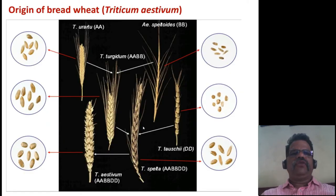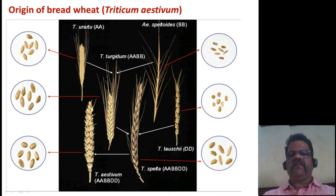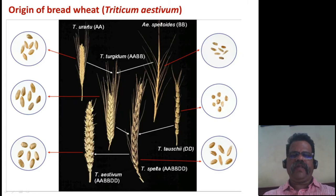This slide shows the origin of bread wheat. Triticum monococcum, which carries the A genome, is naturally crossed with Aegilops speltoides, forming Triticum turgidum or Triticum dicoccoides, which contains the AAB genome — that is tetraploid wheat. This tetraploid wheat again crossed with Triticum tauschii, the goat grass carrying the D genome, and formed the present-day Triticum aestivum wheat, that is AABDD.